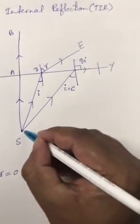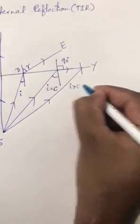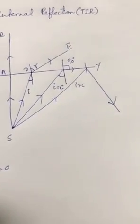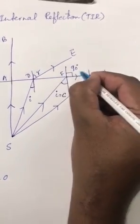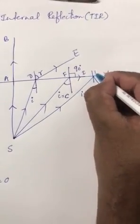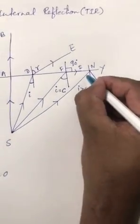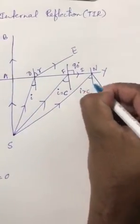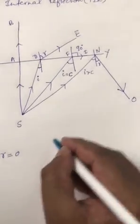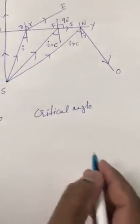In the fourth case, I will increase the angle of incidence above the critical angle. Now the light ray will come back to the same medium. SF is the incident light ray, SN is the incident ray, and NO is the reflected light ray. This angle is the angle of incidence and this is the angle of reflection. We have now discussed the critical angle.